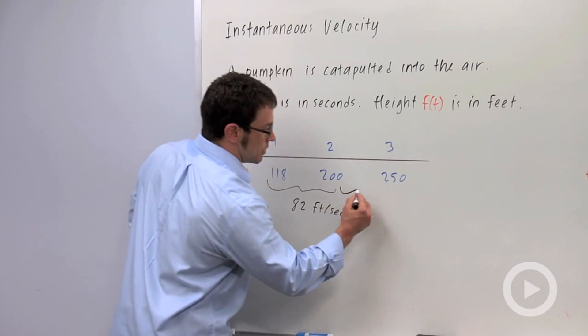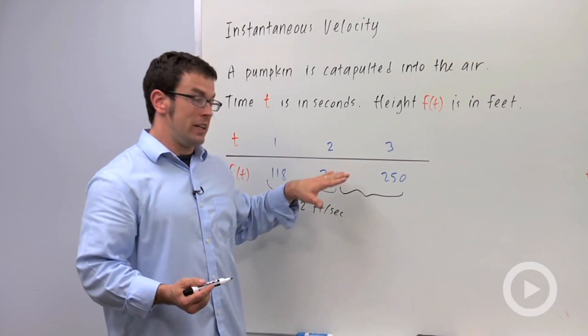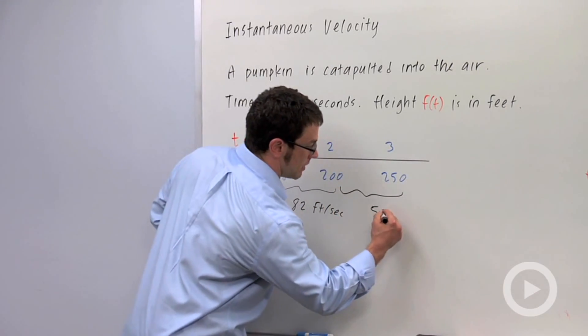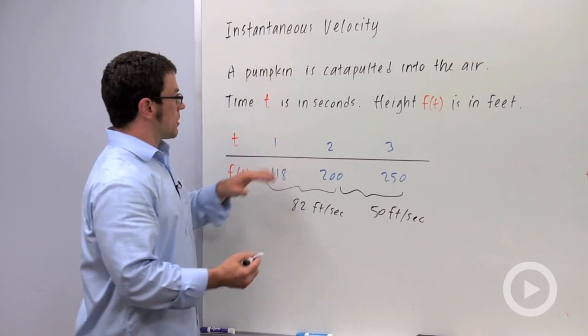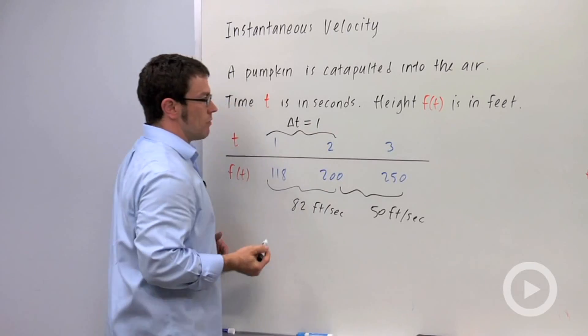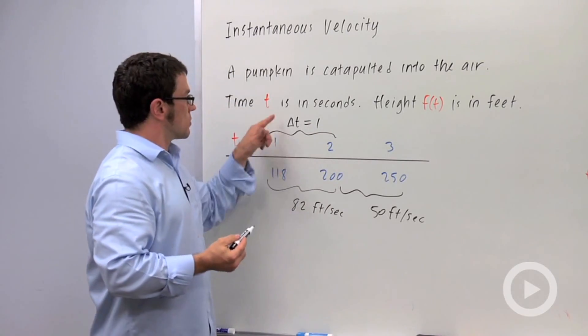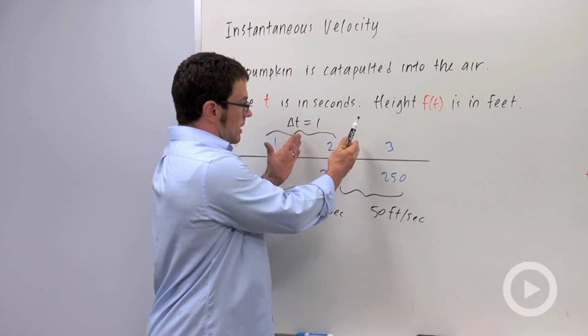And I could also use the average velocity from 2 to 3. And that's 250 minus 200, 50 divided by 1. So 50 feet per second. Now these approximations are using a change in t of 1, both of them, right? 2 minus 1 is 1. Let's see what happens as we narrow this delta t value.